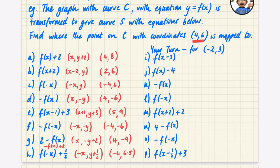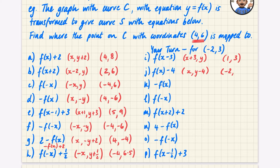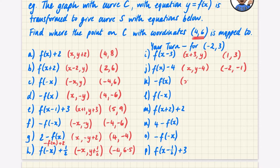For f(x - 3), you're adding 3 to the x coordinate, so instead of -2 it becomes 1, and y stays the same. For f(x) - 4, the y coordinate decreases by 4, so x stays the same and y goes from 3 down to -1. For -f(x), the x stays the same but y becomes negative, so it remains (-2, -3). For f(-x), just change the x to its negative version, so x becomes 2 and y stays as 3.